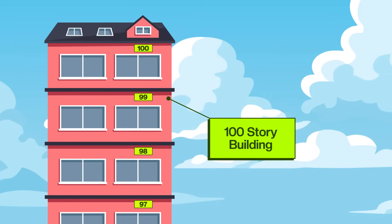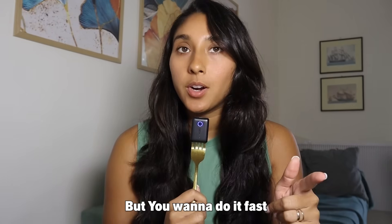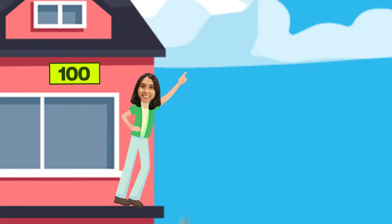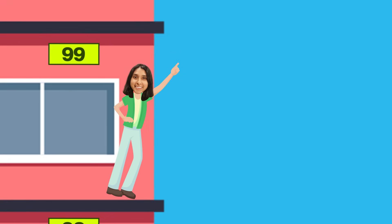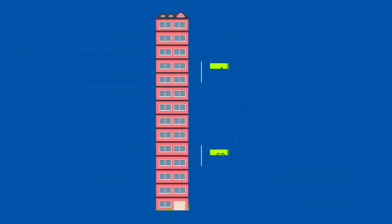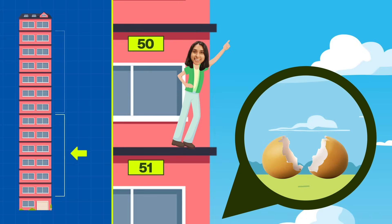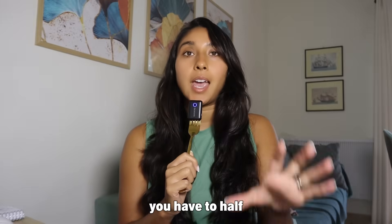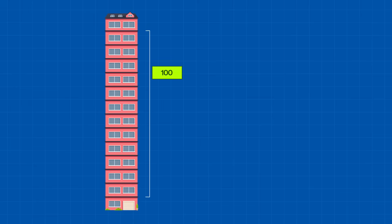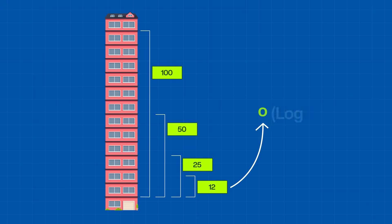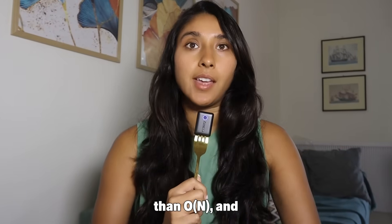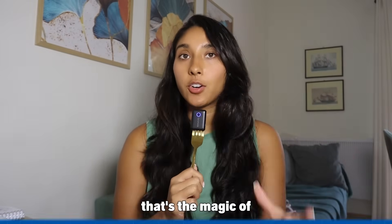Let's take binary search as an example. Imagine you're in a 100-story building with a carton of eggs. You need to find the highest floor where the egg won't break, but you want to do it fast. You can start from the top and go down one floor at a time, but that's 100 tries — way too slow. Instead, cut the problem in half. Start at floor 50. If it breaks, go lower. If it doesn't, go higher. Each time you halve the search space, so you go from 100 to 50 to 25 to 12. That's O(log N) — way faster than O(N).